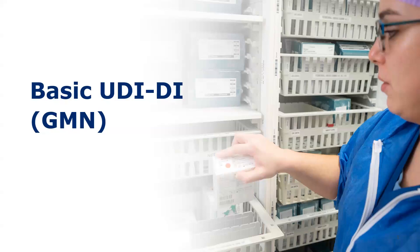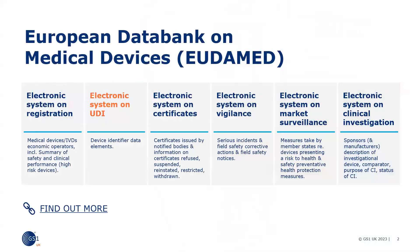This module introduces the concept of the basic UDIDI, what it is assigned to and how it is created. This is an identifier introduced by the EU Commission as part of the UDI requirements of the EU medical device regulations, and is the main key in the database and relevant documentation to connect devices with the same intended purpose, risk class and essential design and manufacturing characteristics. That database is EUDAMED and is made up of six modules, all of which are connected via the basic UDIDI.